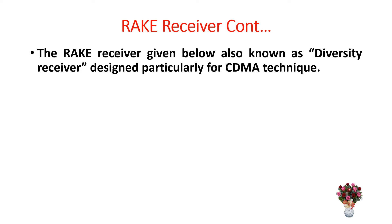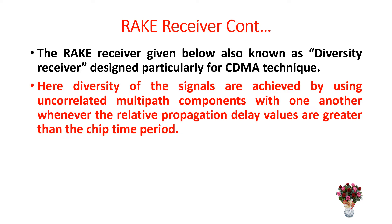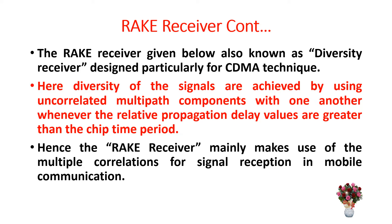The rake receiver is also known as a diversity receiver. It is designed particularly for the CDMA technique. Diversity of signals is achieved by using uncorrelated multipath components with one another whenever the relative propagation delay values are greater than the chip time period.